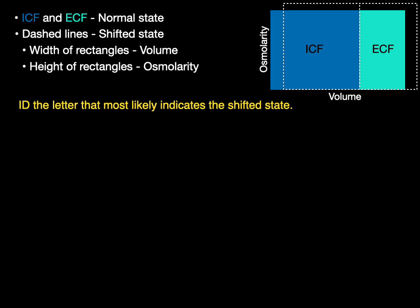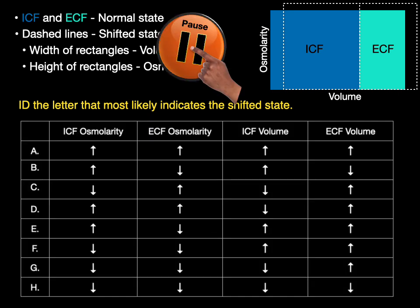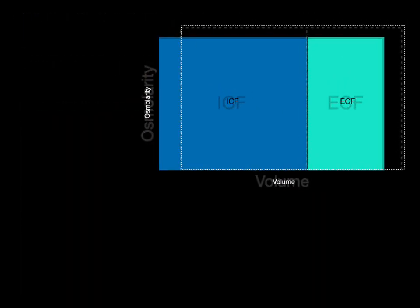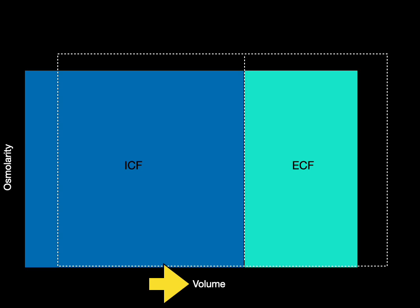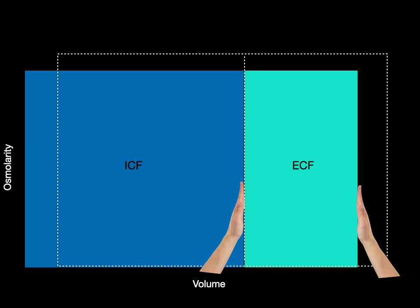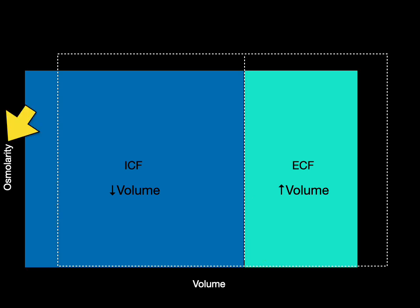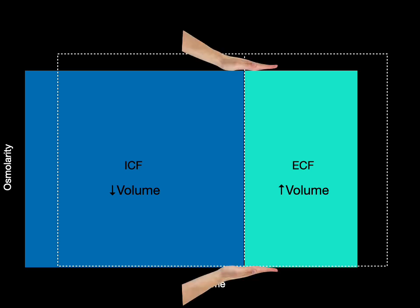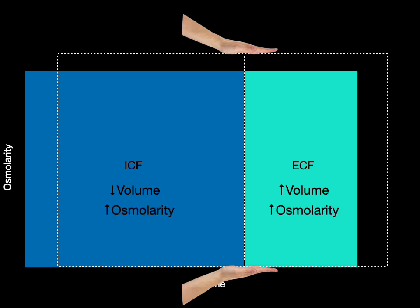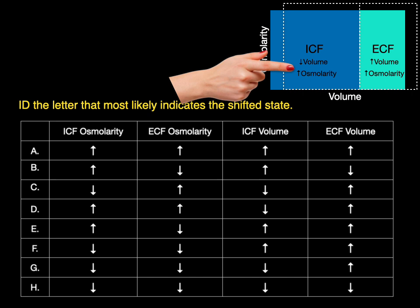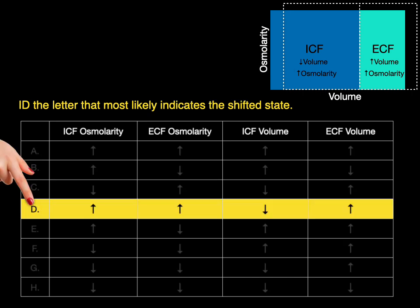With the shifted state shown, identify the letter that most likely indicates the shifted state — pause the video, determine A through E, and then press play again. The x-axis represents volume, so the horizontal line for extracellular fluid gets bigger, meaning an increase in extracellular fluid volume. In contrast, the horizontal line for intracellular fluid became smaller, so there's a decrease in intracellular fluid volume. The y-axis represents osmolarity — notice that the osmolarity line for both compartments got taller, meaning an increase in osmolarity in both compartments. The letter D shows that shifted state.